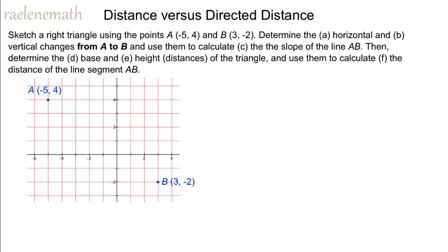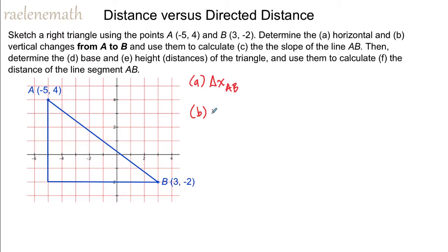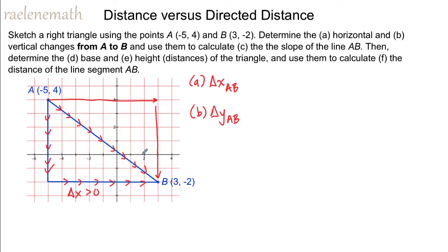Let's take a look at applying distance and directed distance. Here we have two points that we want to connect with a line, and we can form a right triangle out of that line segment as the hypotenuse. In parts A and B, we're asked to determine the horizontal and vertical changes from A to B, which means we want the change in x and the change in y. When we look at going from point A to point B, there are actually two right triangles we could draw. Either way, we find that delta x is going to be positive since the x coordinate increases, and delta y is going to be negative because the y coordinate decreases. We have a third point at the right angle, which has the same x coordinate as point A and the same y coordinate as point B.